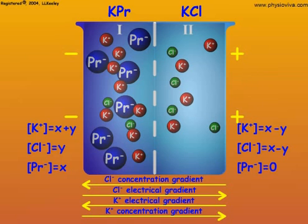The side of the membrane with the permeable cations and anions is positive relative to the side with the impermeable anions.